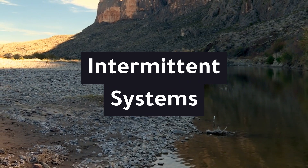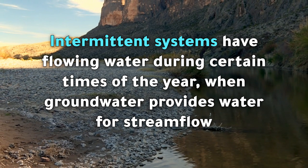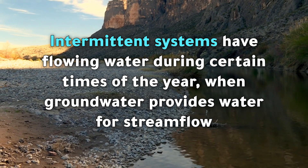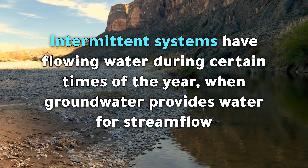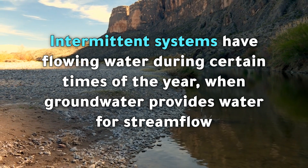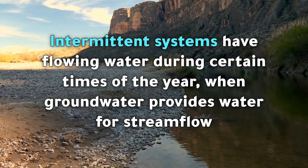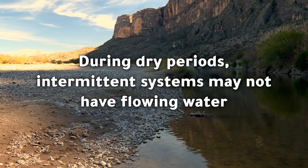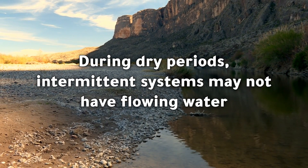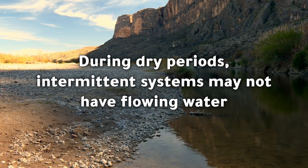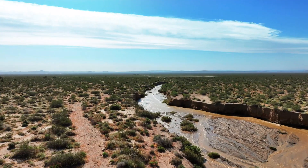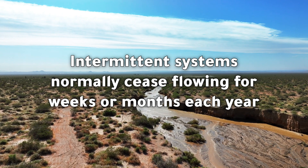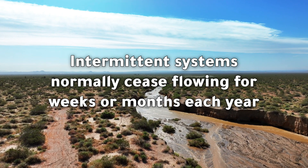Intermittent systems. Intermittent systems have flowing water during certain times of the year when groundwater provides water for stream flow. During dry periods, intermittent systems may not have flowing water. Intermittent systems normally cease flowing for weeks or months each year.